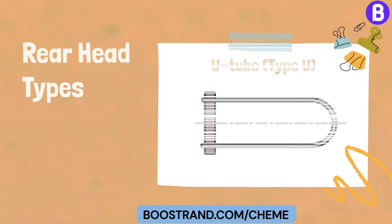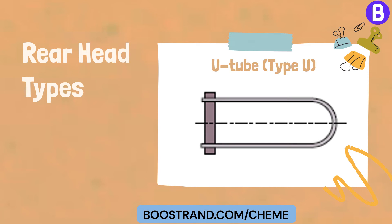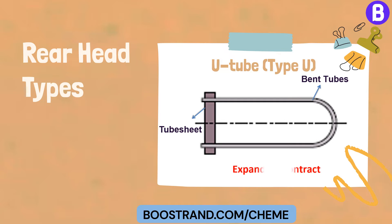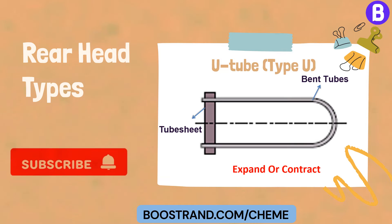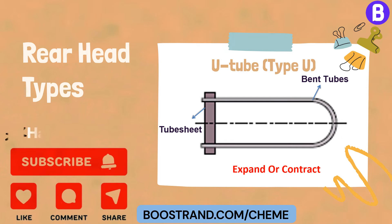U-tube, Type U: this design has a single tube sheet and bent tubes, allowing the bundle to expand or contract to handle stress differentials. However, the tube interior can be difficult to clean due to the U-bend.